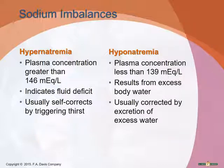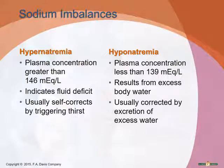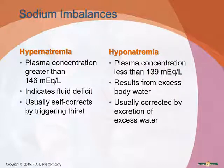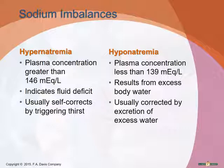Sodium imbalances: hypernatremia — 'hyper' meaning high, 'na' referring to sodium, 'emia' referring to blood — is a plasma concentration greater than 146 mEq/L, usually indicating a fluid deficit. The body usually corrects this by triggering thirst. Hyponatremia — 'hypo' meaning low — is a plasma concentration less than 139 mEq/L, and results from excess body water either from drinking too much or not excreting enough. It is usually corrected by the excretion of excess water by the kidneys.